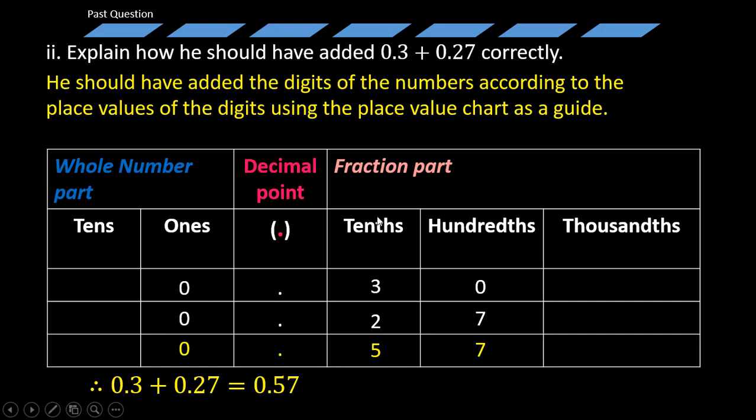So, when asked to do this, you can simply state the point that he should have added the digits of the numbers according to the place values of the digits using the place value chart as a guide. Then, you could have also gone further. Then, you draw the place value chart. And, of course, write the numbers down here and show the calculations as you can see on the screen. This is how these particular types of questions are supposed to be answered.